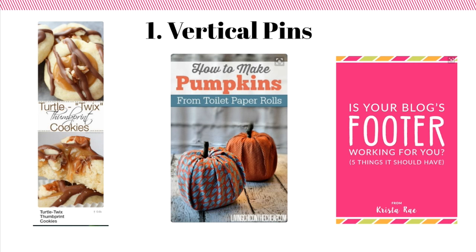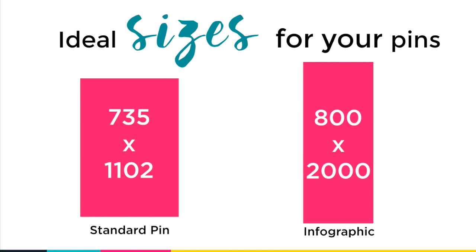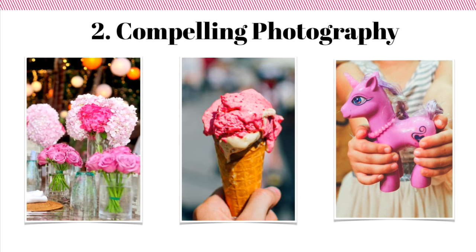Here are some examples of vertical pins: a really tall and skinny one you often see with infographics or recipe bloggers featuring multiple photos of the same recipe, a DIY pin in the middle, and a blogging informational pin. For dimensions, here are your size guidelines. For a standard pin, use 735 by 1102 pixels; for a longer pin, go with 800 by 2000. If you're using Canva, these are already built-in templates, making it easy. I best not be seeing horizontal images after tonight.